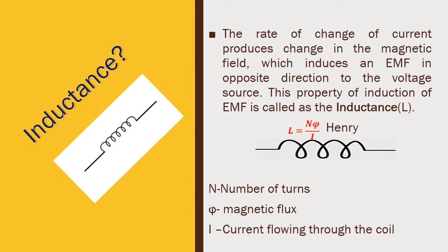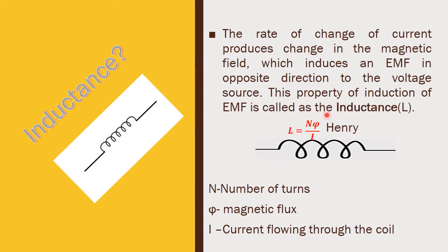Next, we are going to see the definition for inductance. The rate of change of current produces a change in magnetic field, which induces an EMF in the opposite direction to the voltage source. This property of induction of EMF is called inductance. Inductance is denoted by the letter capital L. L is equal to N phi by I Henry. Henry is the unit of inductance, phi is the Weber magnetic flux, N is the number of turns, and I is the current flowing through the coil.